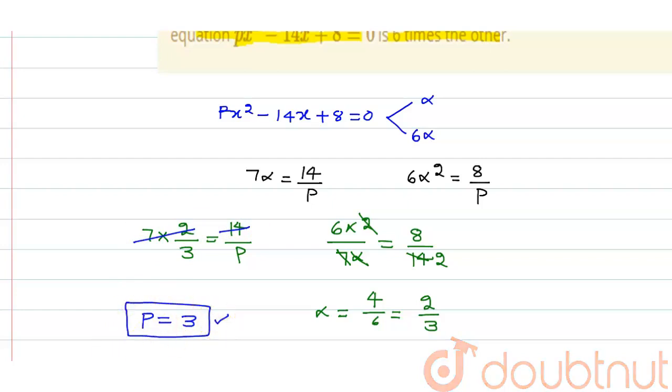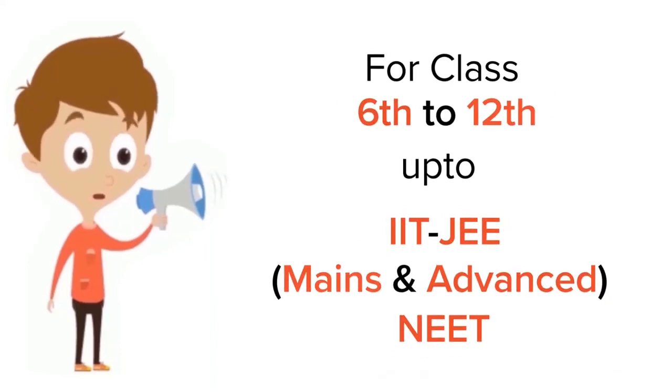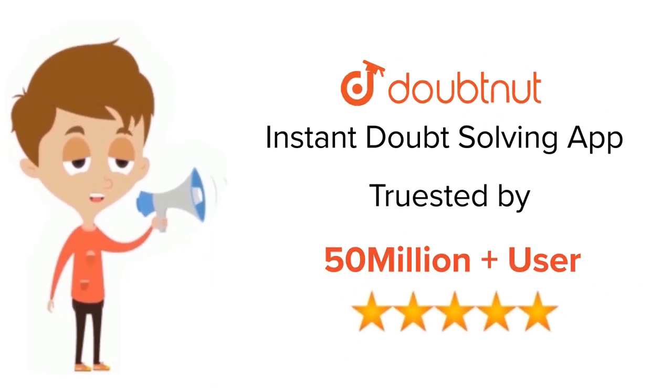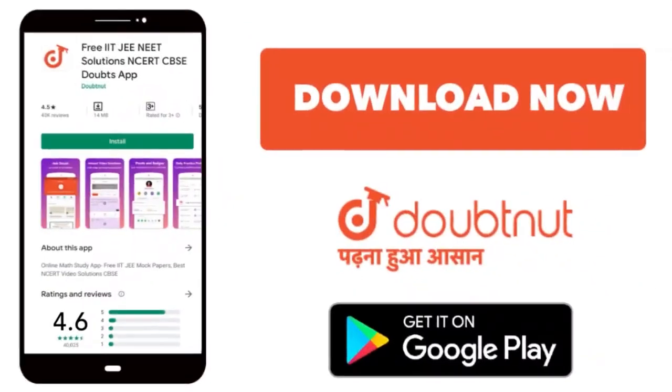So the value of p is equal to 3. Thank you. For class 6 to 12, IIT-JEE and NEET level, trusted by more than 5 crore students. Download Doubtnut today.